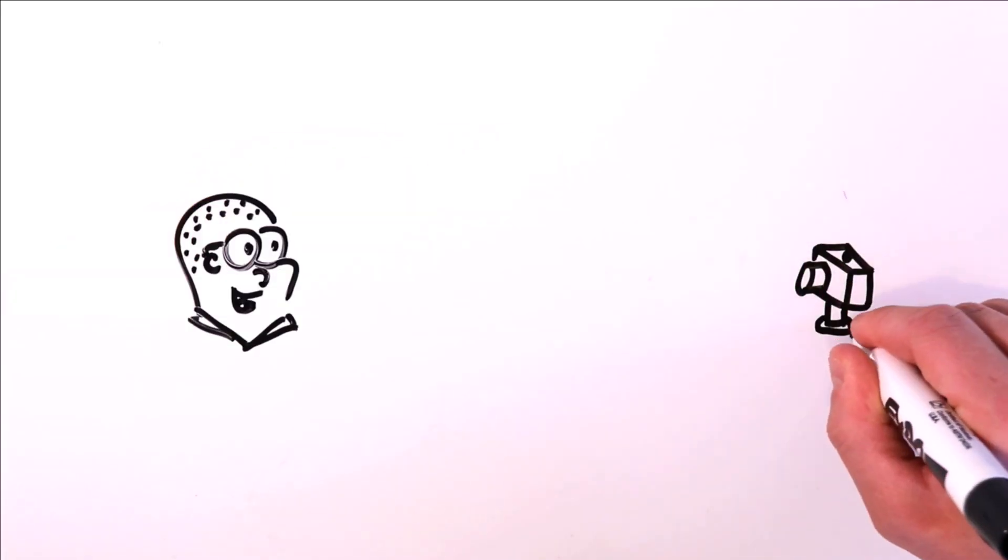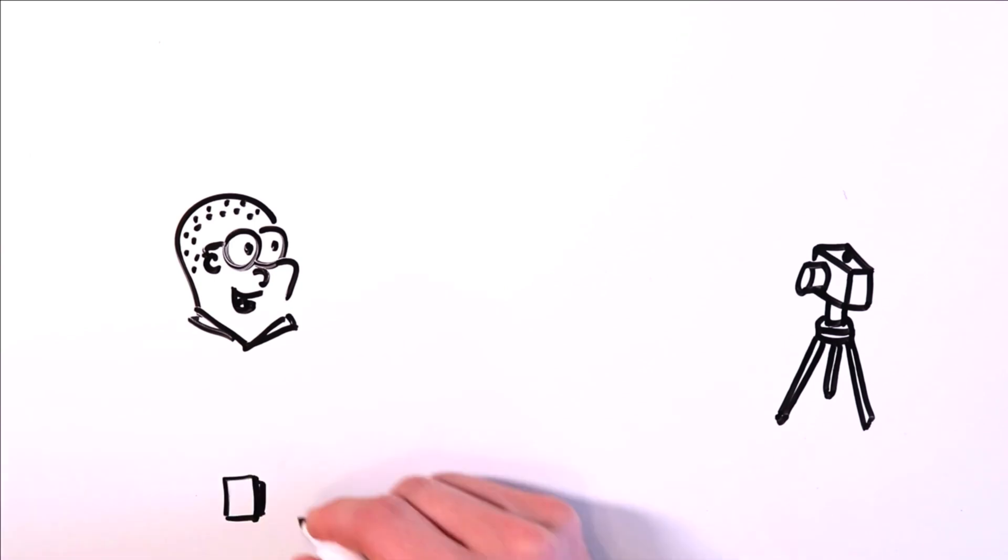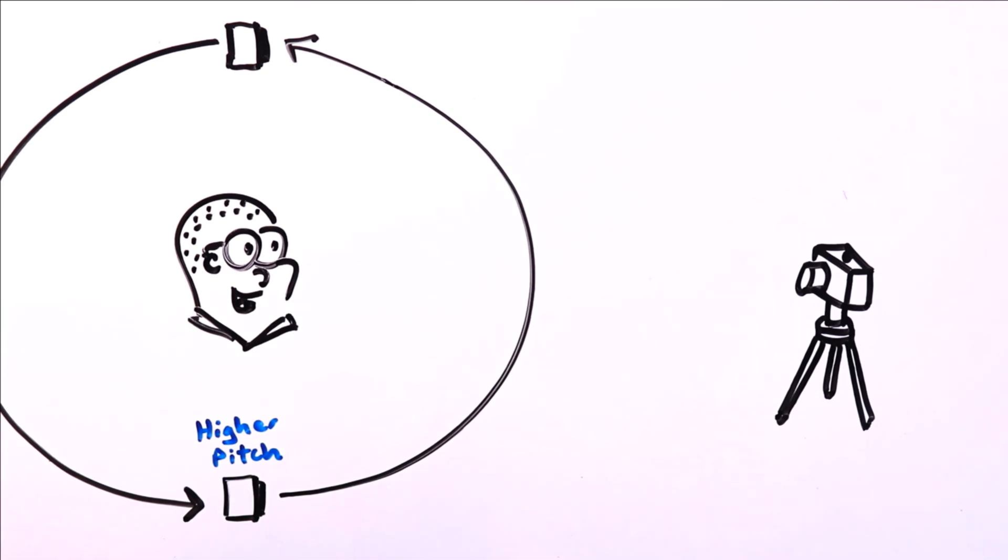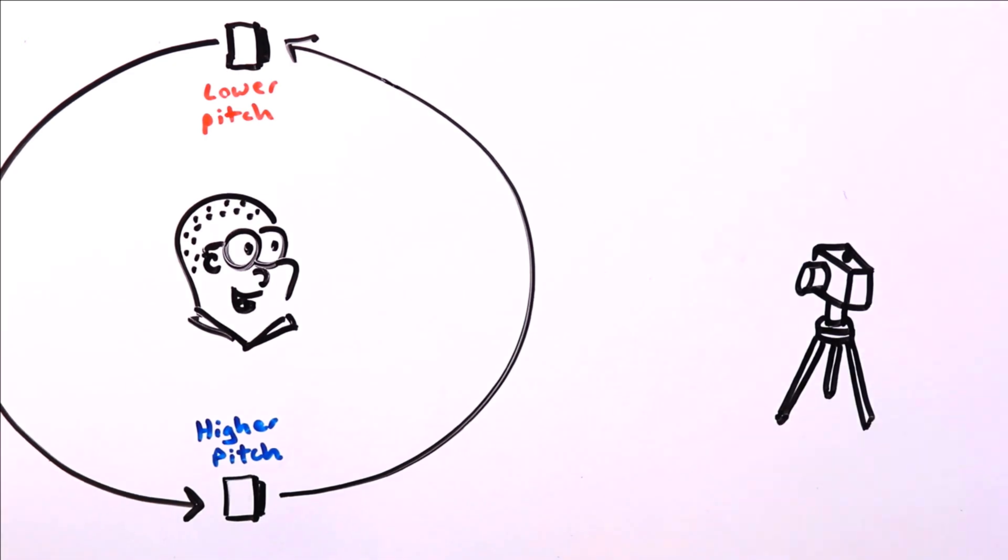Let's look at what's going on in this demonstration of the Doppler effect. As I swung the speaker around my head, we heard a higher pitch while it was moving toward the camera. When it moved away from the camera, we heard a lower pitch. Why?